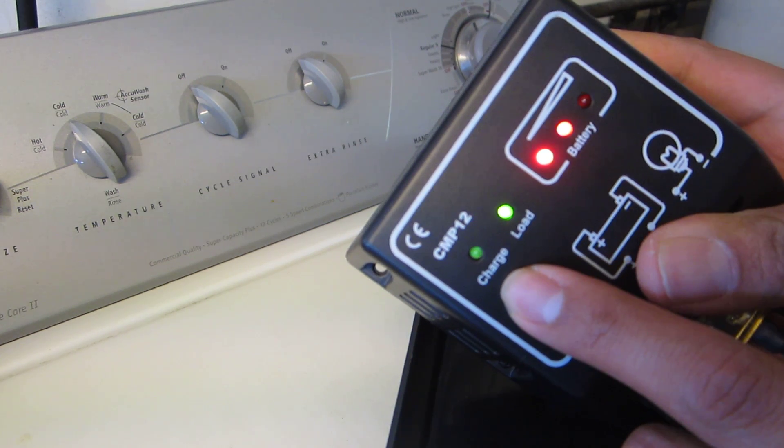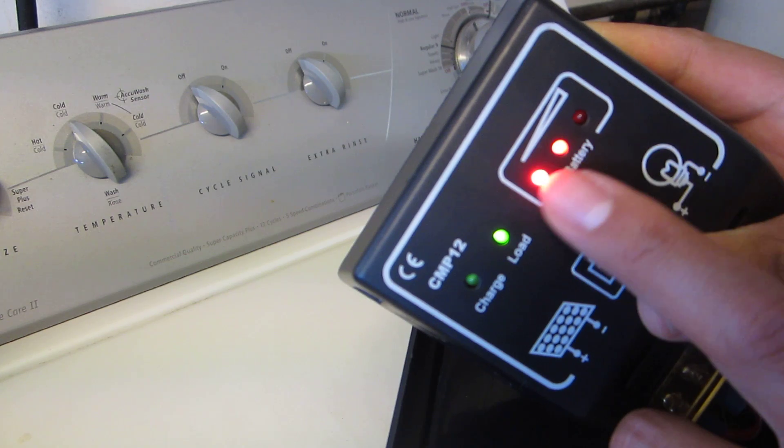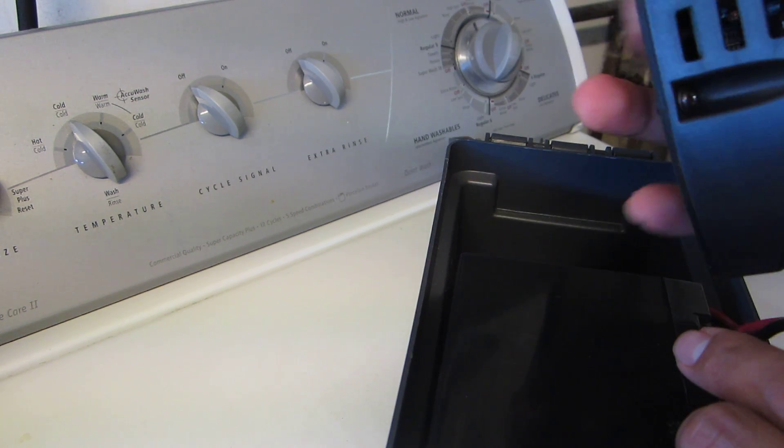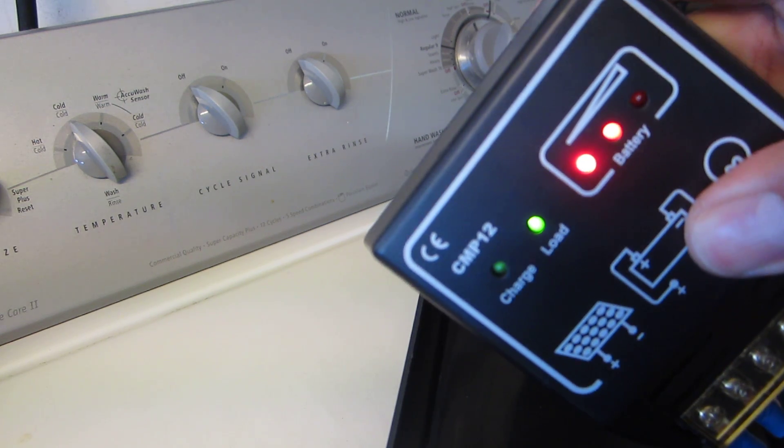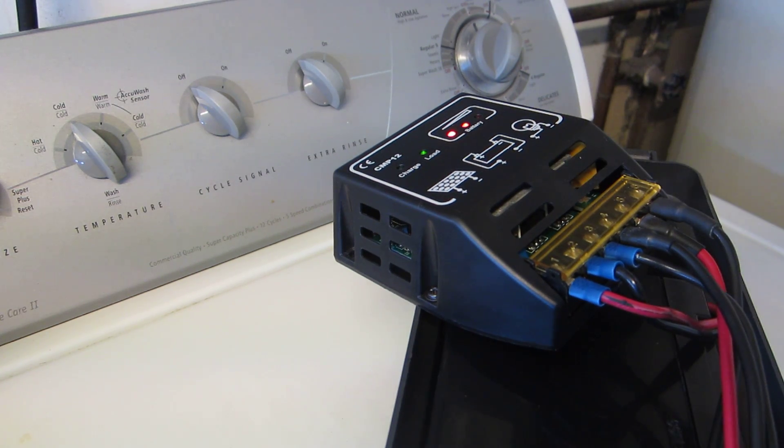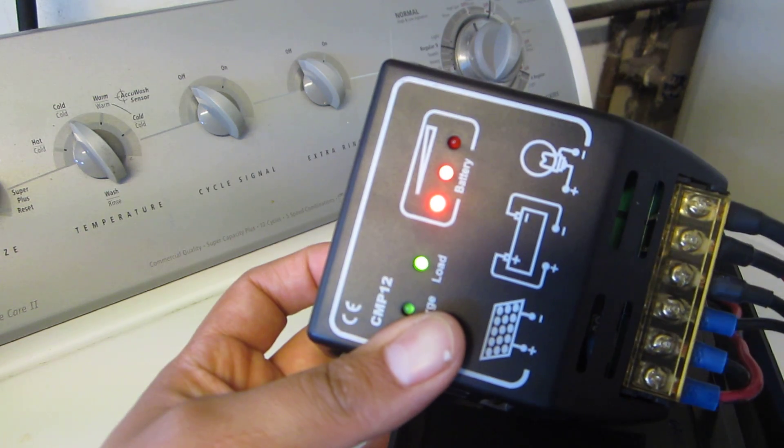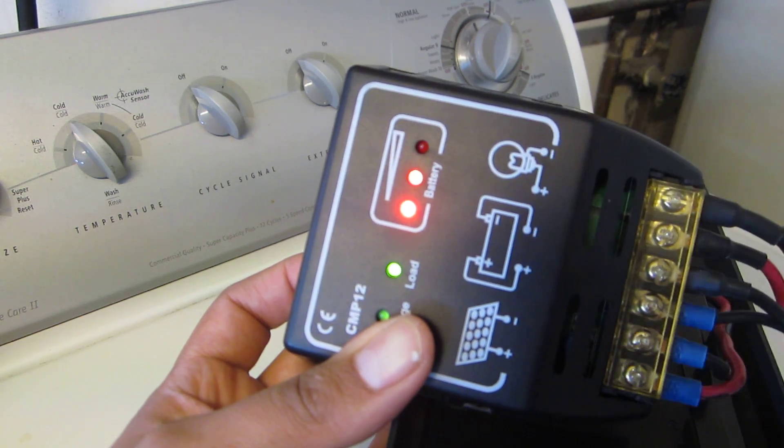It has a charge indicator showing if it's taking a charge or there's a load, and a battery indicator. What's neat about this solar charge controller, which I got for about $12 on eBay, is it shuts off at 10 volts. If your 12 volt battery drops to 10 volts, that means your battery is pretty much dead, so it will kill the power going out to your load.